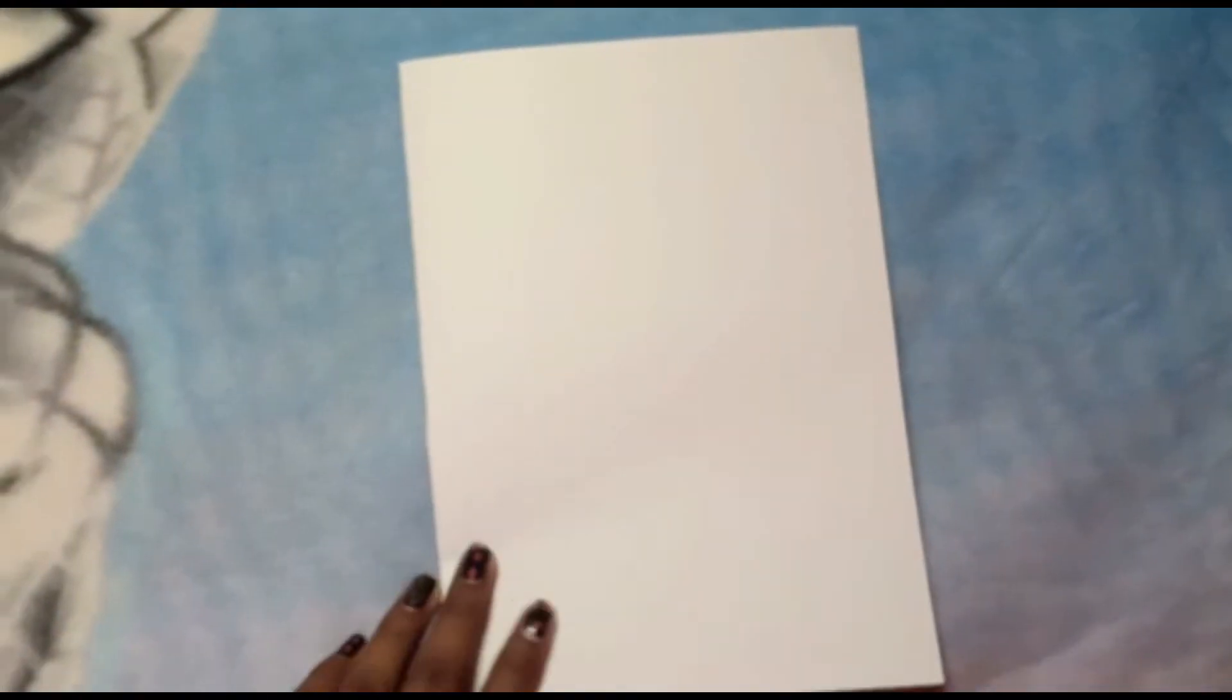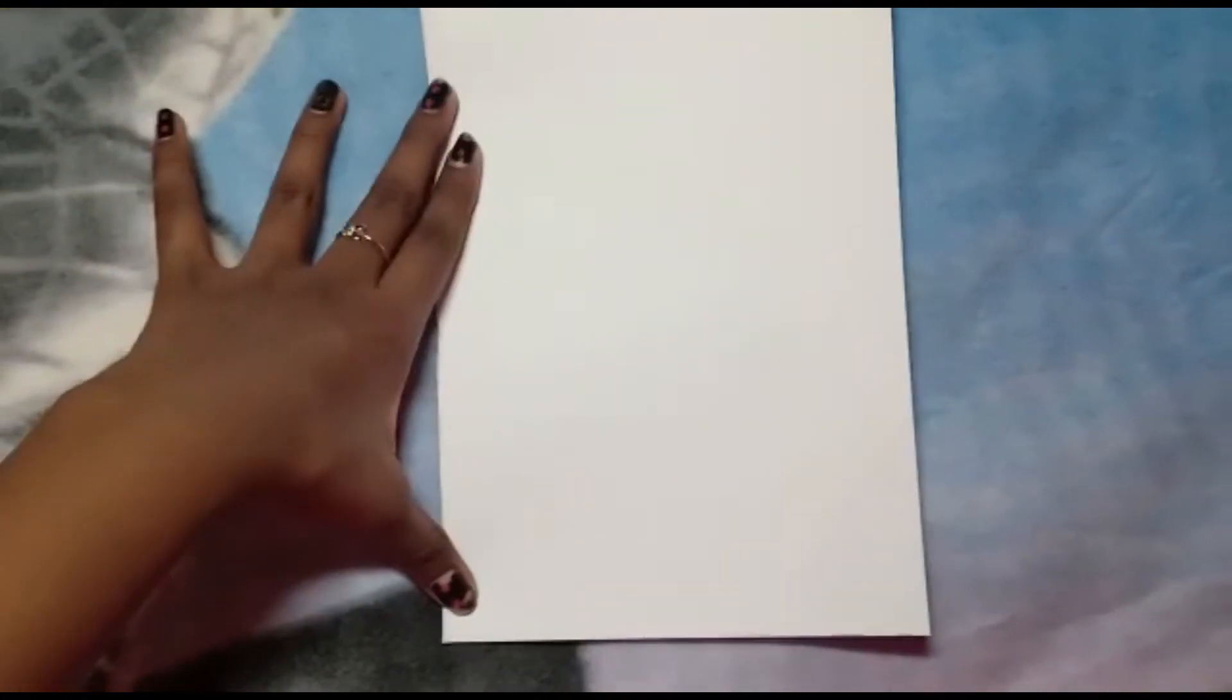Today we'll be doing this animal wall hanging decoration. Now I'm taking an A4 sheet and I'm folding it into half. Voila! Good job.